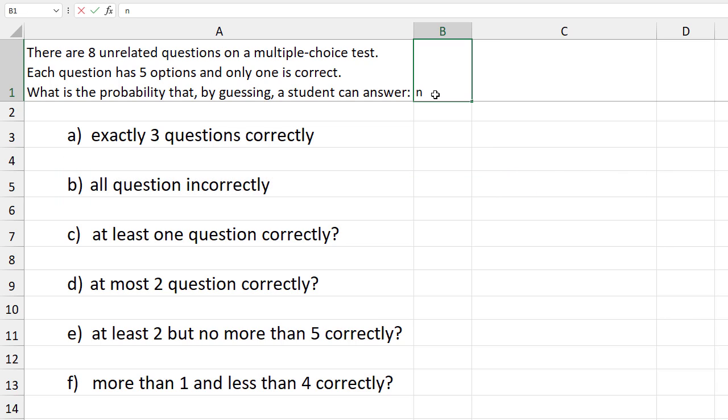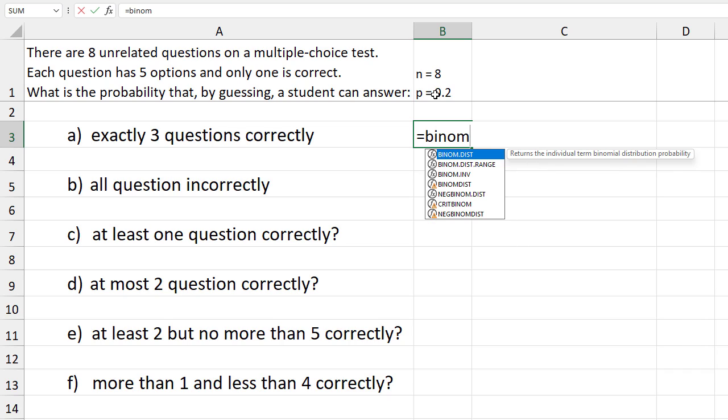For this problem, the number of trials n equals 8, and the probability of success p equals 1 over 5 or 0.2. For exactly 3 successes, type equals Binom, select the second option from the drop-down.